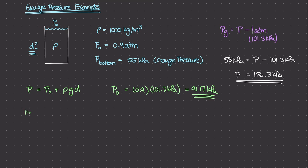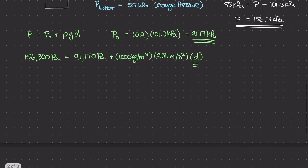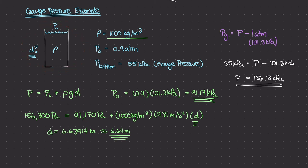Plugging in values: P is 156,300 pascals, equal to P₀ of 91,170 pascals, plus rho of 1,000 kg/m³, times gravity of 9.81 m/s², times d. Solving for d gives approximately 6.64 meters. This is the depth of the container, found using the gauge pressure of 55 kilopascals given at the bottom.